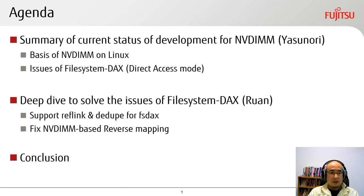Here is the agenda. First, I'd like to talk about a summary of the current status of development for NVDIMM — the basis of NVDIMM-only DAX and issues of file system DAX. DAX means Direct Access Mode. Next, Ransom will talk about a deep dive to solve the issues of file system DAX, covering Reflink and Dedupe for FSDAX, and fixes for NVDIMM-based reverse mapping. Then I'll talk conclusion.